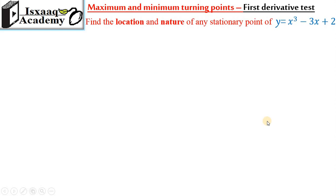We are going to use the stationary point. The stationary point is where the slope of this is zero. The slope of this is the derivative. The derivative of this is zero. The nature of this is the maximum or minimum.